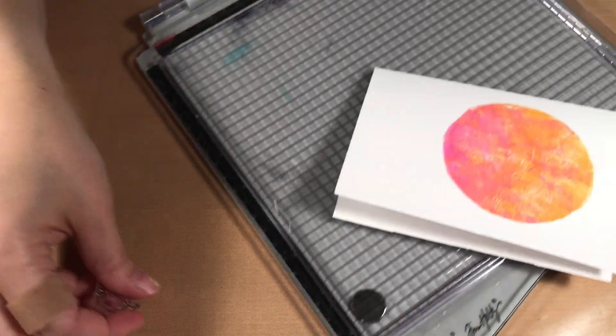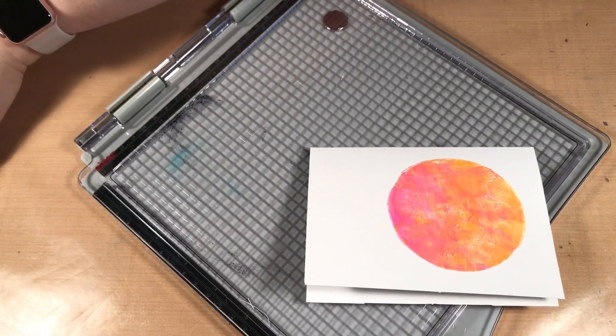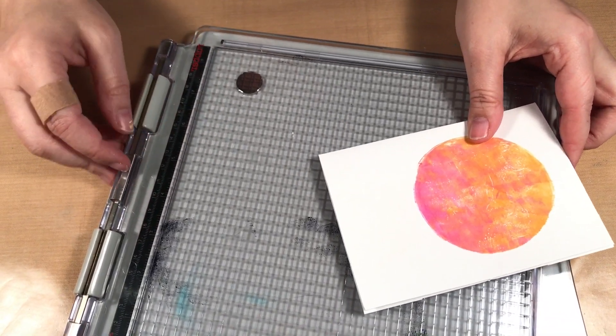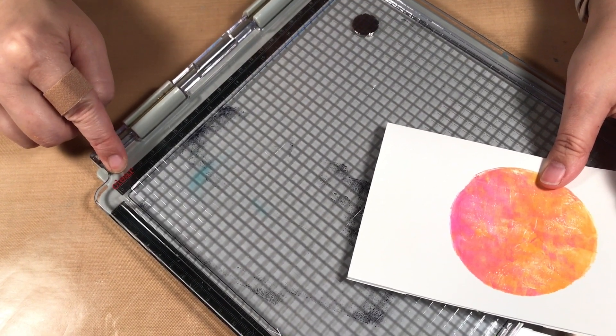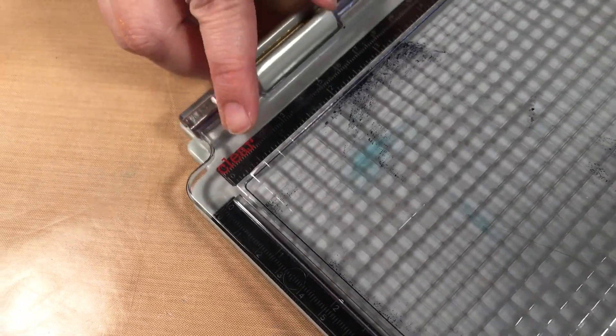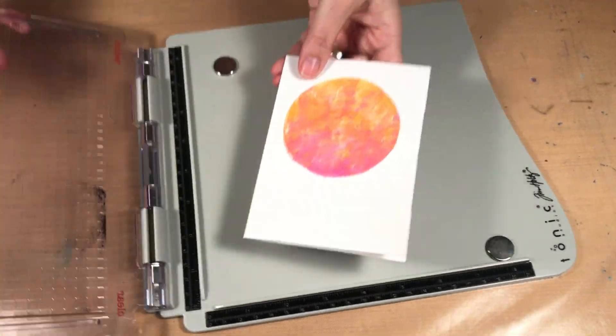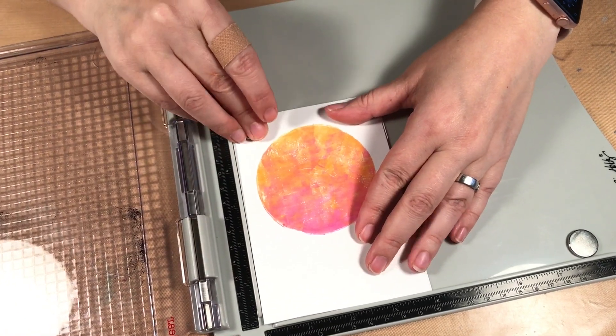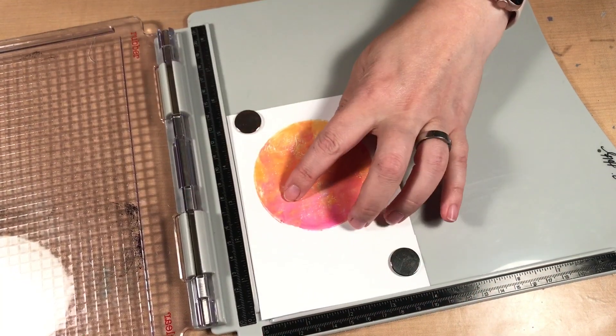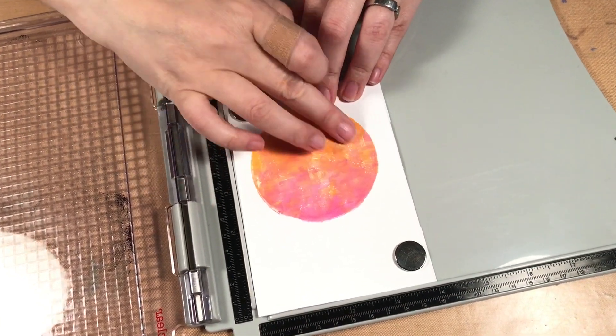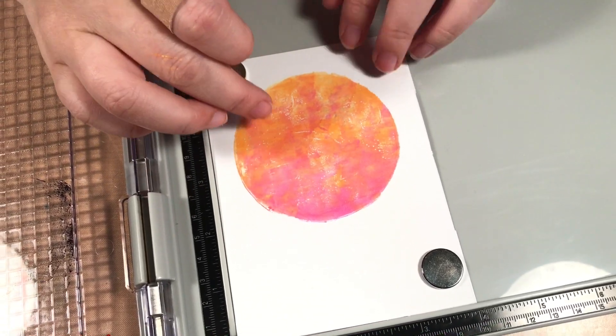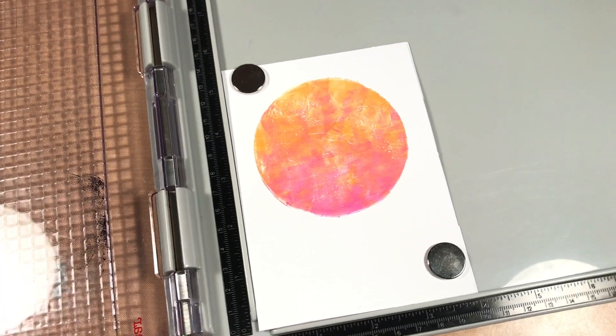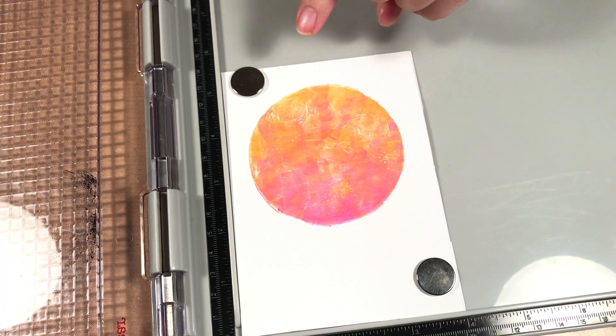For this I'm going to use my stamp press, the stamping platform from Tim Holtz. I have it on the clear side, you can see here, so I know it's the right side for my stamps. I'll do it like this to make it easier. One reason I'm using my stamp press is because I am stamping on an acrylic paint.